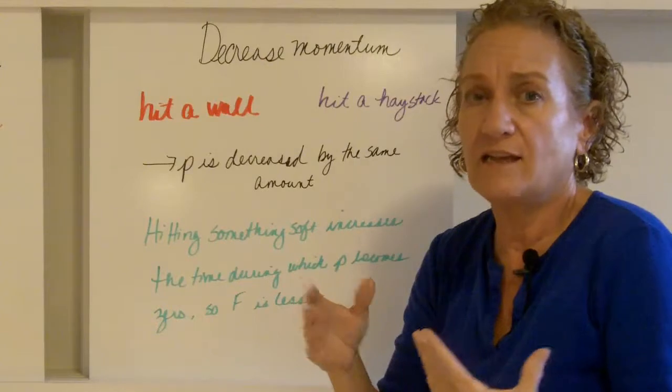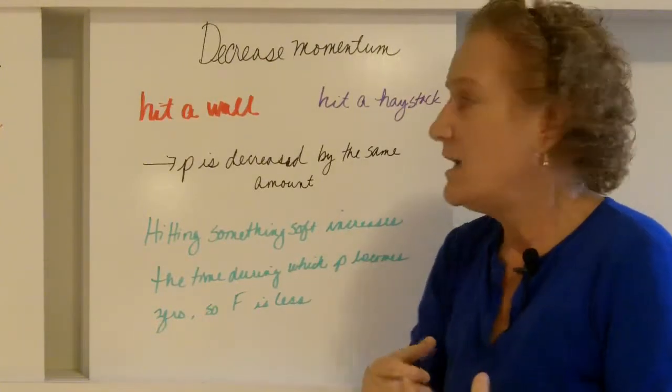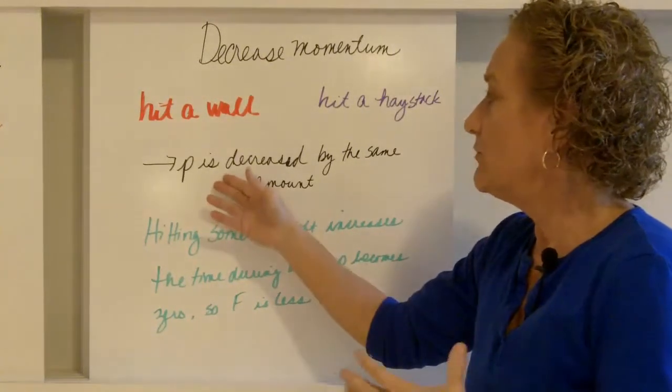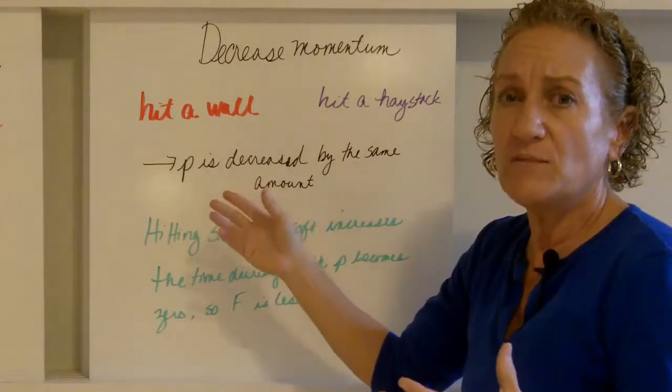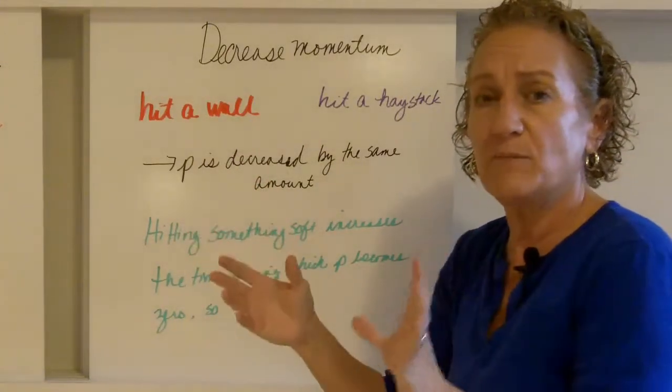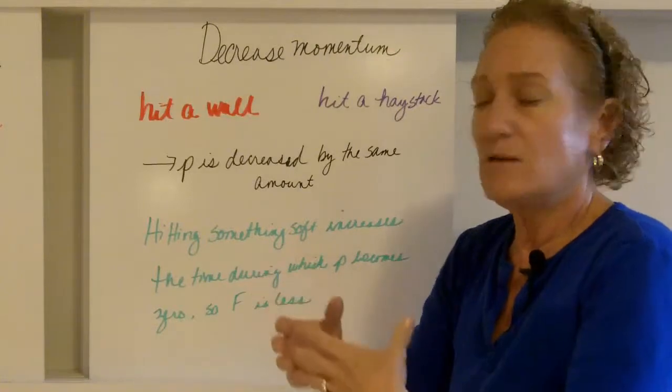Well, I'm guessing you're going to choose the haystack, and that would be the right thing to choose. When you're going to decrease, in both cases, you're going to decrease your momentum by the same amount. Your velocity is going to end up being zero, so your momentum is going to end up being zero.